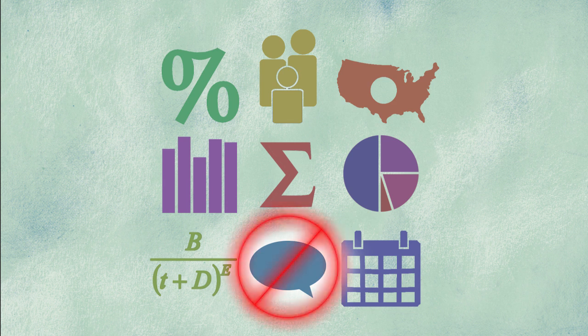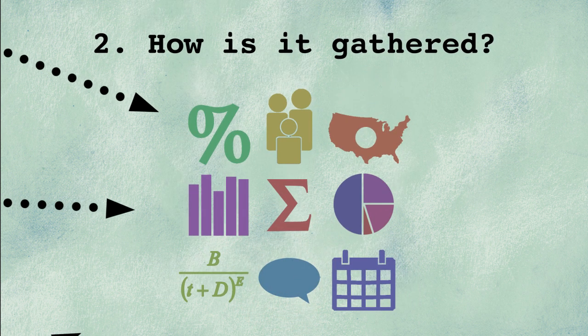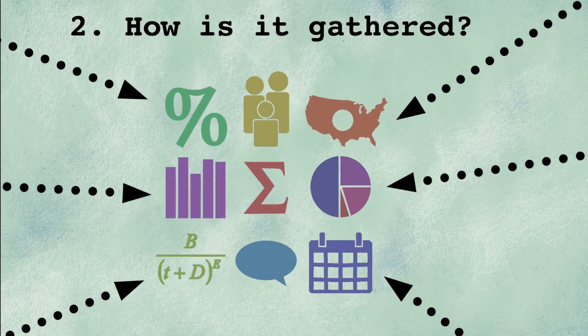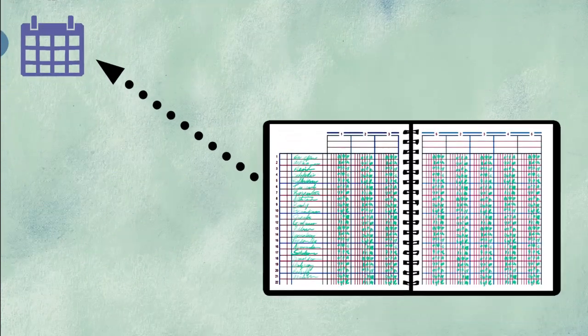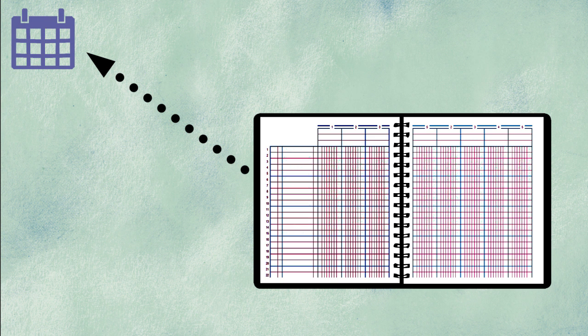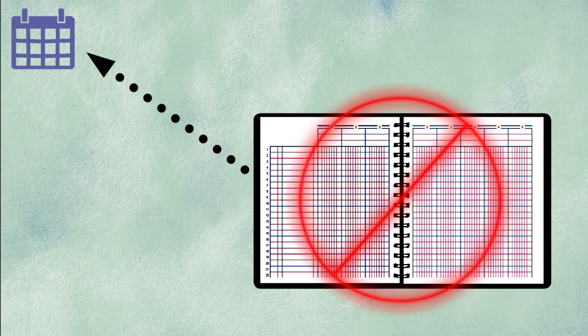2. How is the information being gathered? For example, the analytics may be based on grades entered in your online gradebook, but if you don't use an online gradebook or don't keep it up to date, then analytics based on that information are irrelevant.